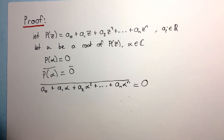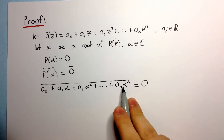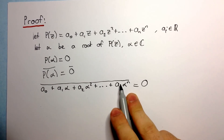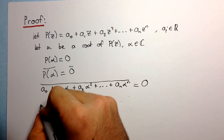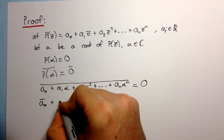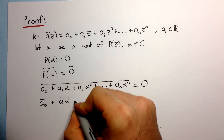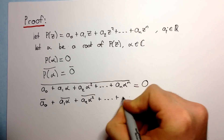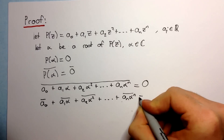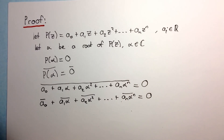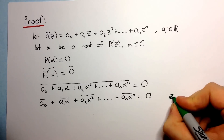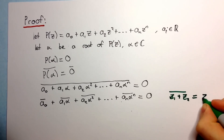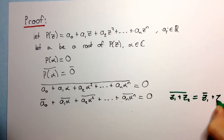Here we use a property of complex numbers and their conjugates. We use the fact that the conjugate of a sum is equal to the sum of the conjugates. So we get A₀ bar plus A₁ alpha bar plus A₂ alpha squared bar plus up to AN alpha to the N bar is equal to zero. This uses the property that the conjugate of Z₁ plus Z₂ equals the conjugate of Z₁ plus the conjugate of Z₂.